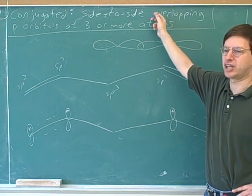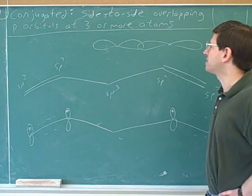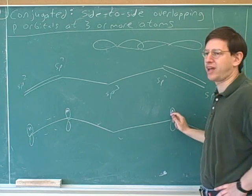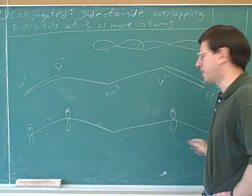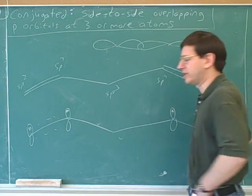This is not what we're talking about in conjugation. And you can see why, because the whole idea of conjugated is we want to have a whole series of overlapping. Well, you can't really get that series of overlap with head-to-head overlap, but we can get it with all these orbitals that are parallel to each other.